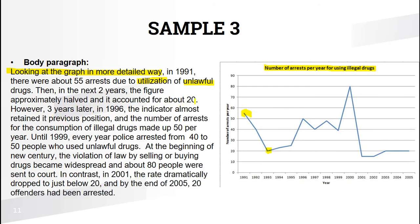However, three years later in 1996, the indicator almost retained its previous position — it was 55 and became 50 — and the number of arrests for consumption of illegal drugs made up about 50 per year. Until 1999, police arrested from 40 to 50 people who used unlawful drugs every year. I wrote it as an active sentence to avoid repeating the same vocabulary structures.